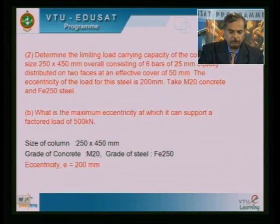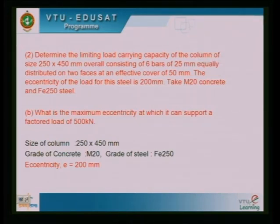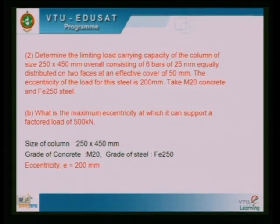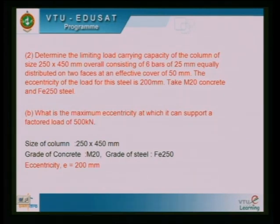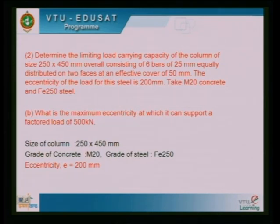The problem for today's class: determine the limiting load carrying capacity of a column of size 250 by 450 mm overall. It is a rectangular column consisting of 6 bars of 25 mm dia equally distributed on two faces, with an effective cover of 50 mm. The eccentricity of the load is 200 mm. Take M20 concrete and Fe250 steel. The second part asks: what is the maximum eccentricity at which it can support a factored load of 500 kilo Newton?